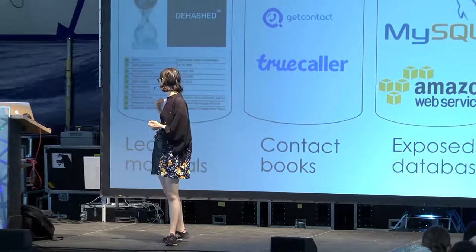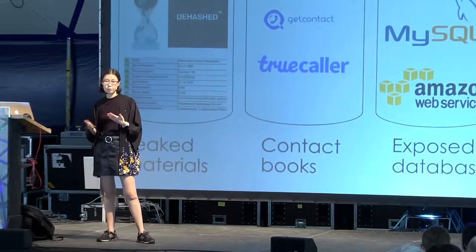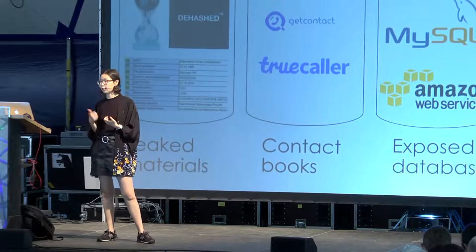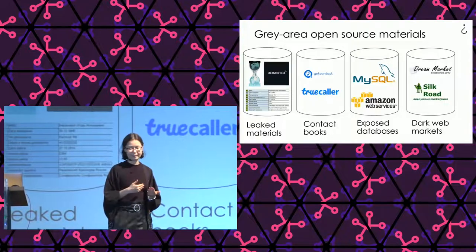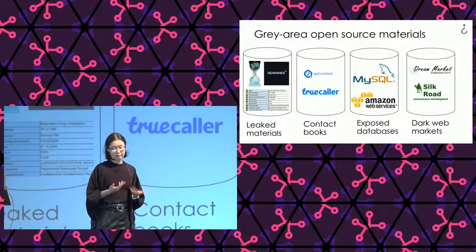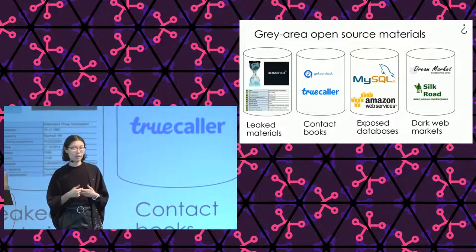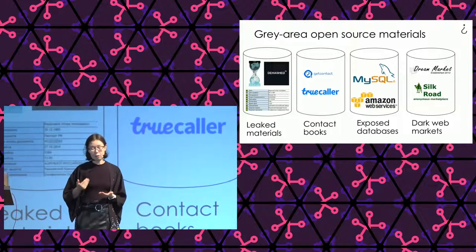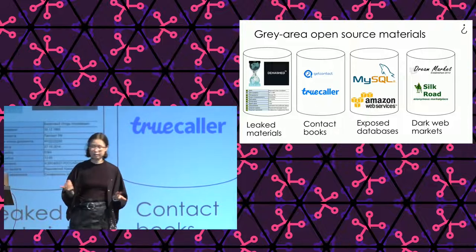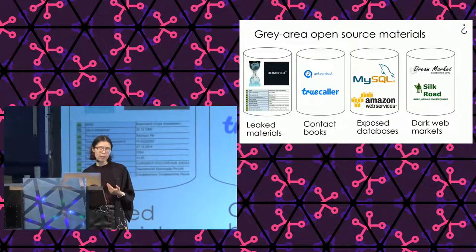There are two sides to using leaked data. On one hand, it can help us find GRU or FSB agents or other bad actors. On the other hand, by buying this information we're incentivizing hackers to get and leak data, or supporting platforms sharing personal information of many people. In each case, we have a discussion about whether it's really worth it — we'd only use it when it's in the public interest.